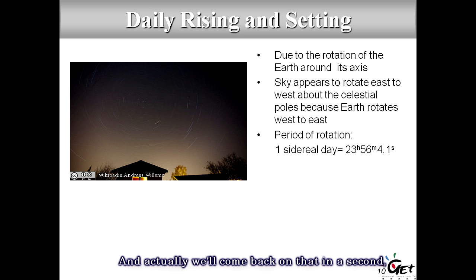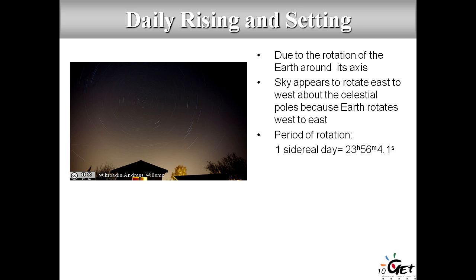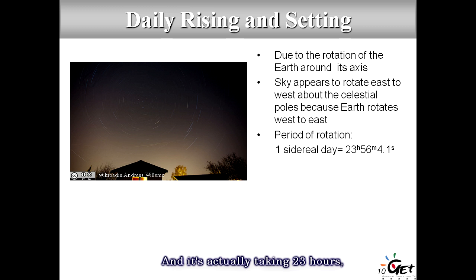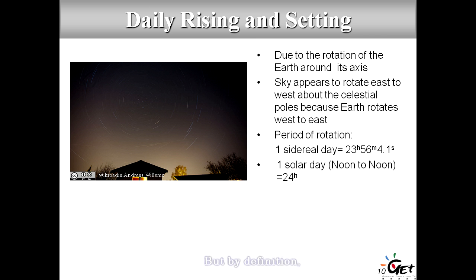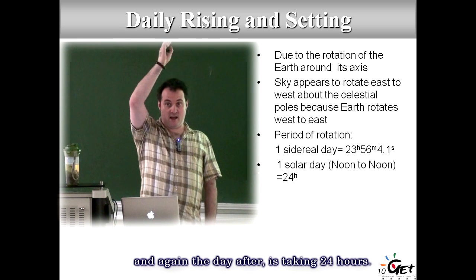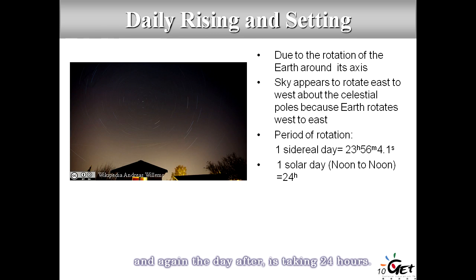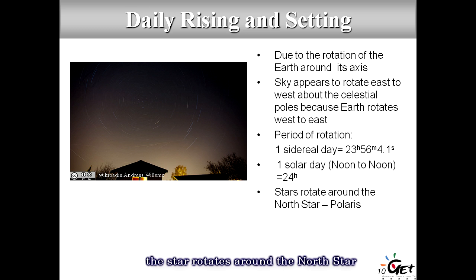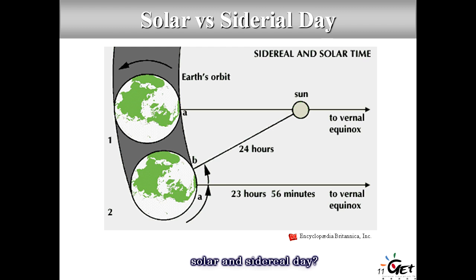Things are a bit more complicated — we have several ways of measuring the period of rotation. The sidereal day is how long it takes for a given star to return to the same place: 23 hours, 56 minutes and 4 seconds. But by definition the solar day — the time between having the Sun directly overhead and it being there again the next day — is 24 hours. So why is there a difference between these two notions of day?